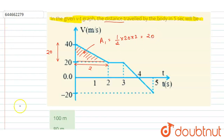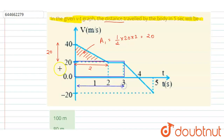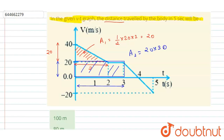Next, we calculate the area of this rectangle. The length is 3 and the height is 20, so area A2 equals 20 into 3, which is 60.